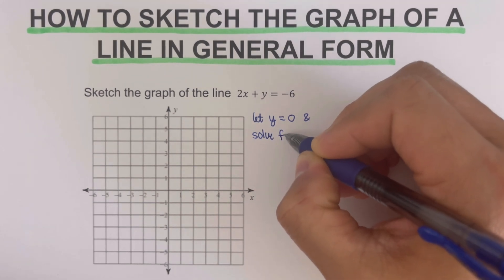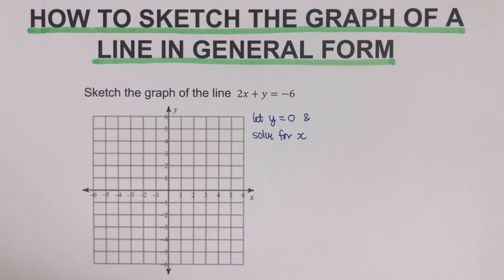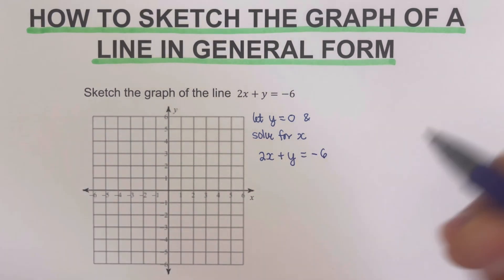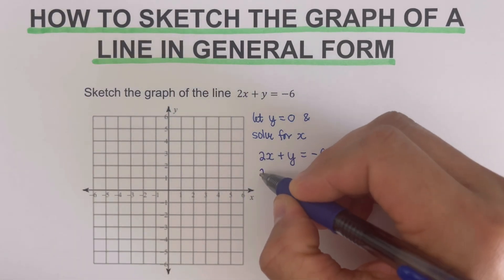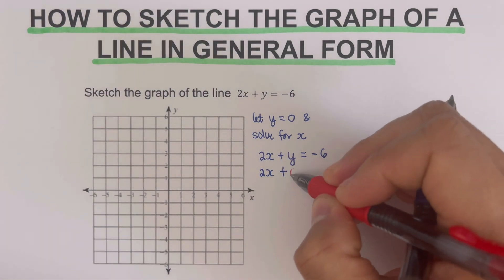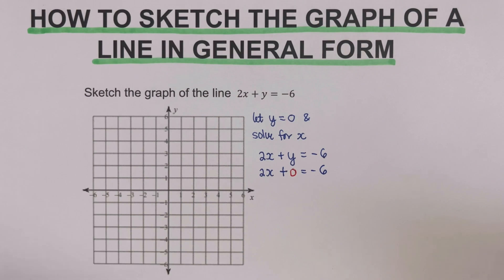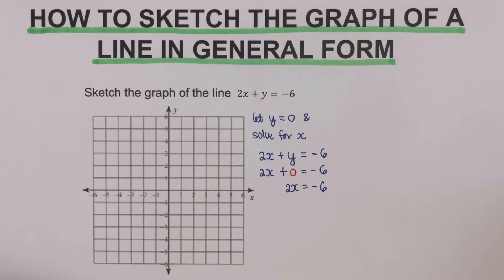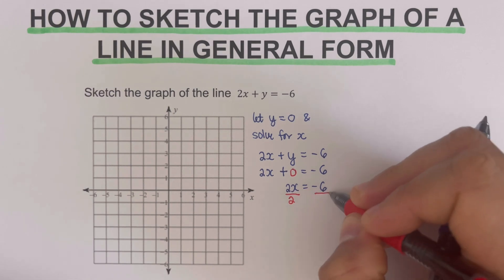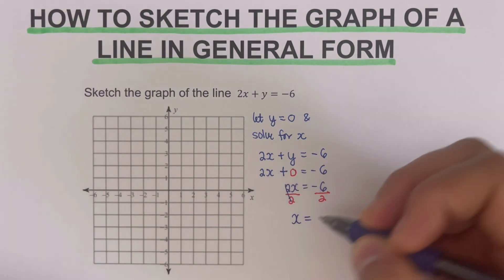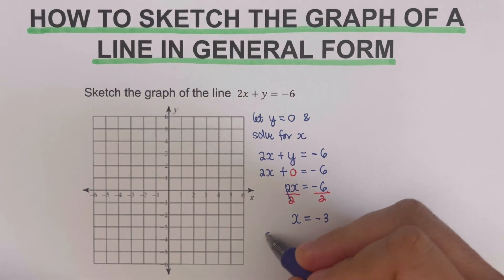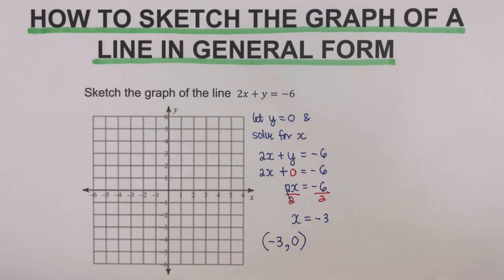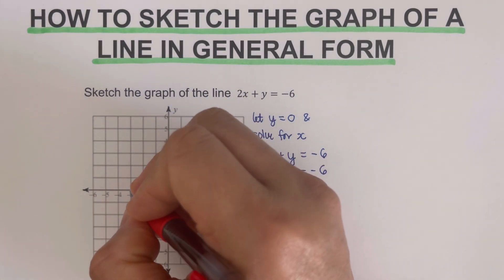Plugging zero in for y: 2x plus 0 equals negative six, which gives us 2x equals negative six. Dividing both sides by 2, we get x equals negative three. This tells us the x-intercept coordinate is negative three, zero. We can go ahead and plot this point — negative three, zero — as our first dot.